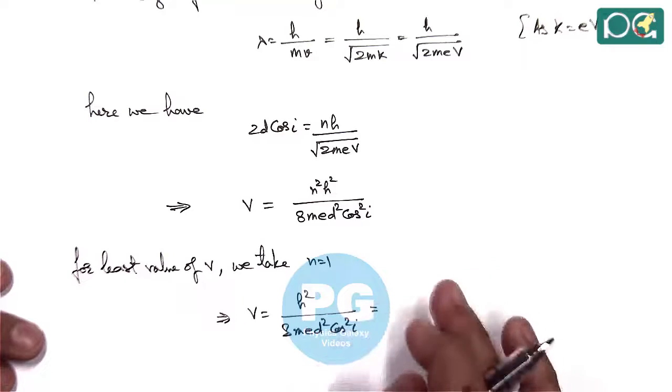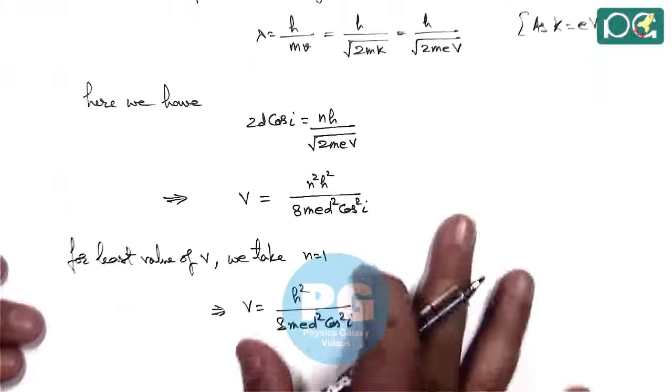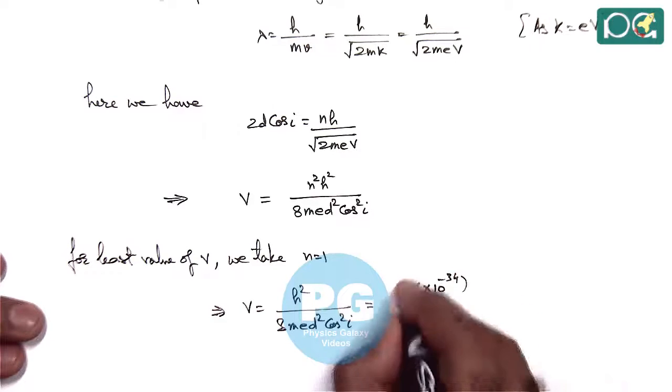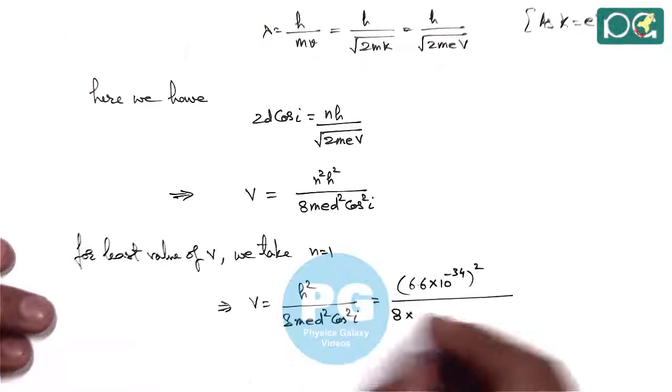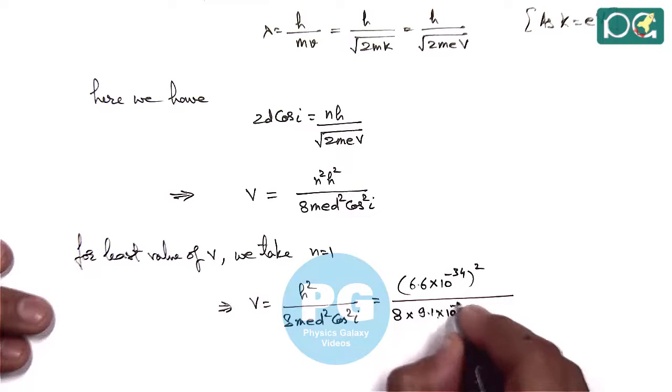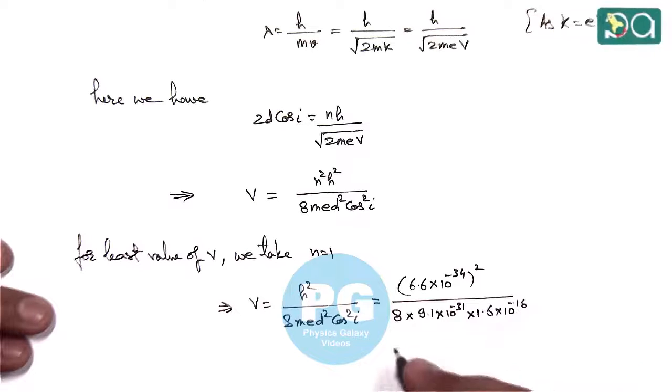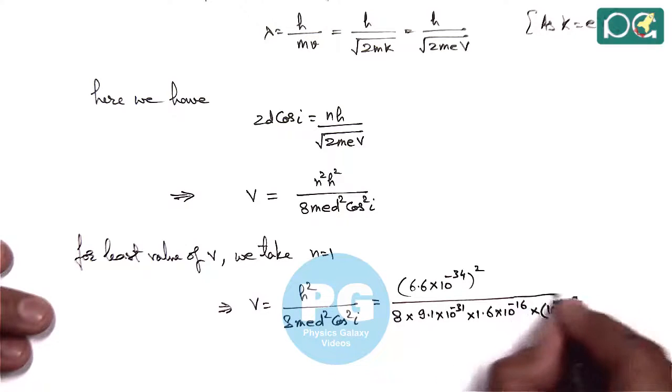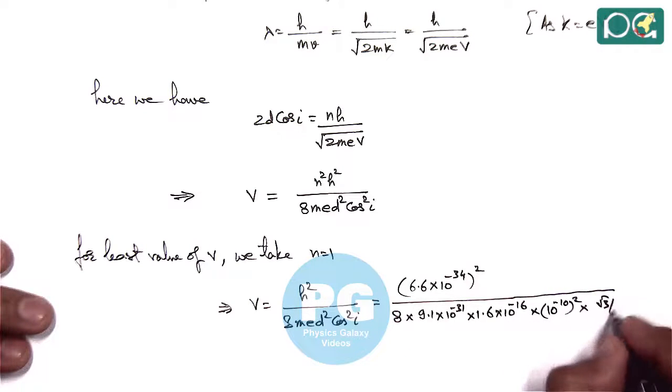And we can substitute the values of H, M, E, D, I. So here H is 6.6 into 10 to power minus 34 whole square, divided by 8. Mass is given to us as 9.1 into 10 to power minus 31. E is 1.6 into 10 to power minus 16. And D is 1 angstrom, so it is 10 to power minus 10 whole square. And I is taken as 30 degrees, so cos 30 is root 3 by 2, so here it is root 3 by 2 whole square.